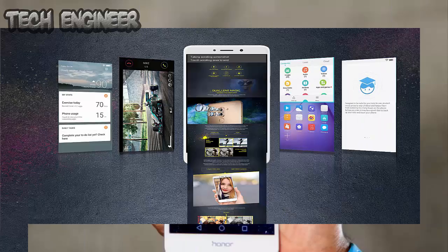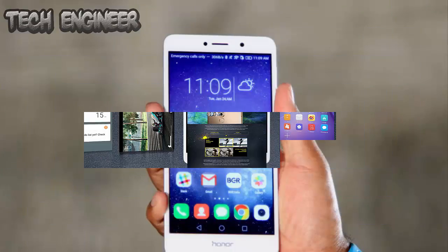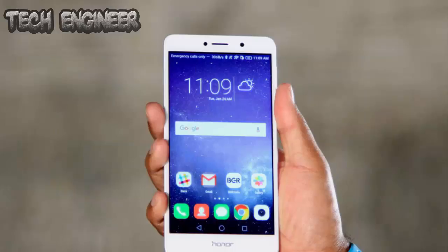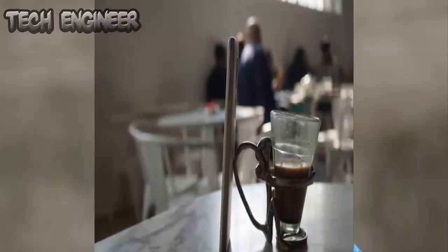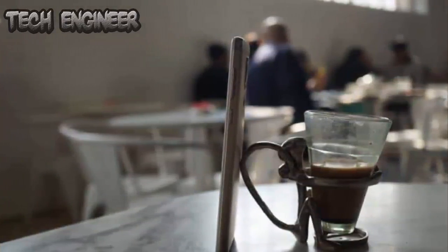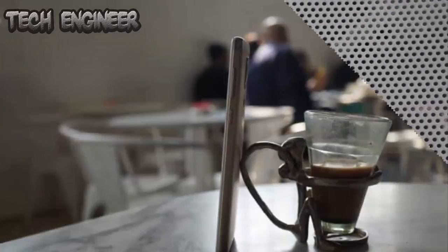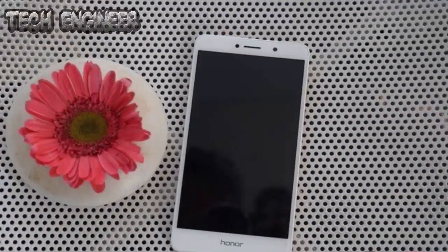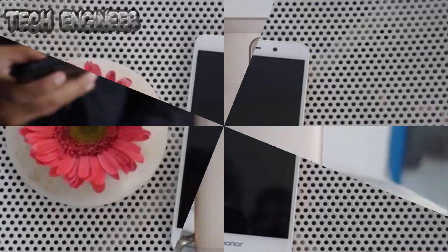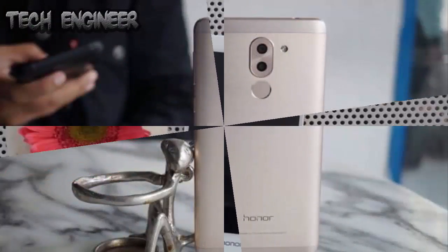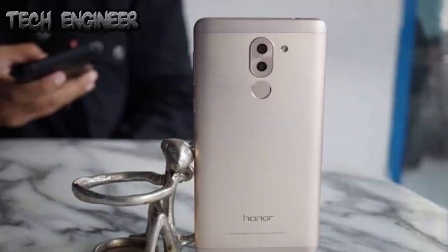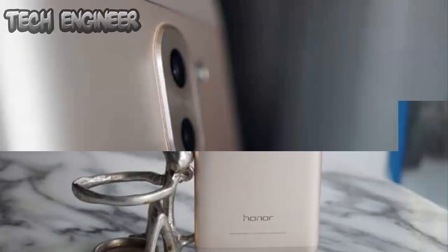Talking about the camera setup on the Honor 6X, it has a 12-megapixel primary sensor along with a 2-megapixel secondary sensor that helps the primary sensor to increase the aperture range from f0.95 to f16, thus allowing the user to highlight the object and defocus the background. In short, you get captures similar to the ones you take on a DSLR, but on a smartphone.